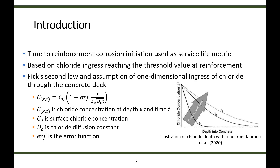In the ABC UTC guide, the time to reinforcement corrosion initiation was used as a service life metric. It was based on chloride ingress reaching a threshold value and used Fick's second law, assuming one-dimensional ingress of chloride through the concrete deck. The calculation is based on the equation: C(x,t) = C₀ × [1 − erf(x / (2√(D_C × t)))], where C(x,t) is the chloride concentration at depth x and time t, C₀ is the surface chloride concentration, D_C is the chloride diffusion constant, and erf is the error function. This figure shows an illustration of the progression of chloride concentration with depth over time.